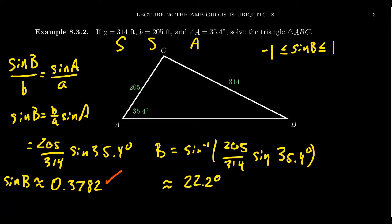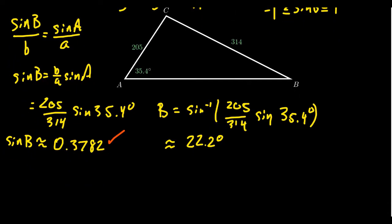In this situation, that would then give us that the measurement of angle C is going to equal 180 degrees, subtract angle A, subtract angle B. So we end up with 180 degrees minus 22.2 minus 35.4 degrees. This gives us that C equals 122.4 degrees.